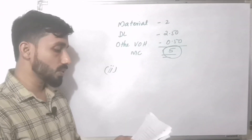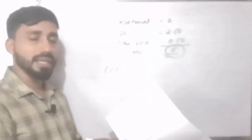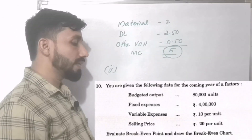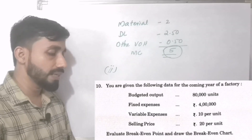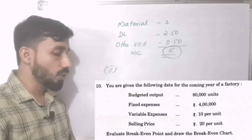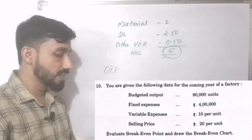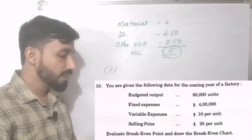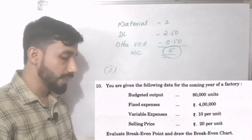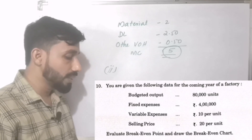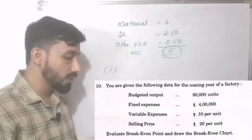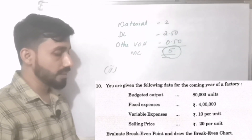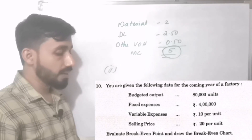Next question, Part B. You are given the following data for the coming year of a factory: Budgeted output 80,000 units, Fixed expenses Rs. 4 lakh, Variable expenses Rs. 10 per unit, Selling price Rs. 20 per unit. Evaluate the break-even point and draw the break-even chart.